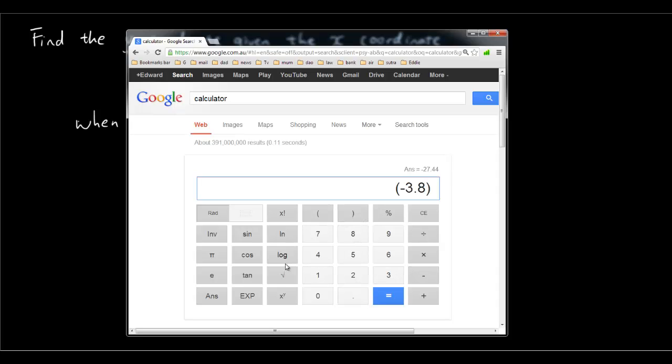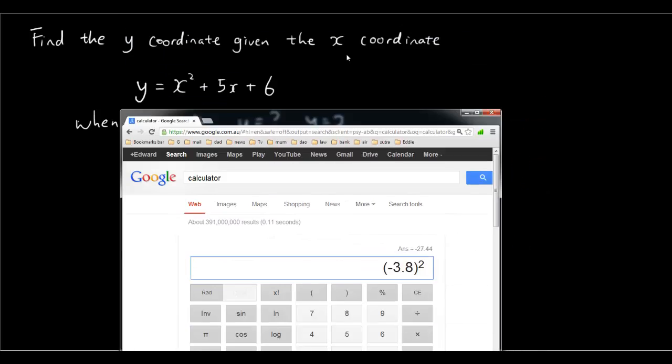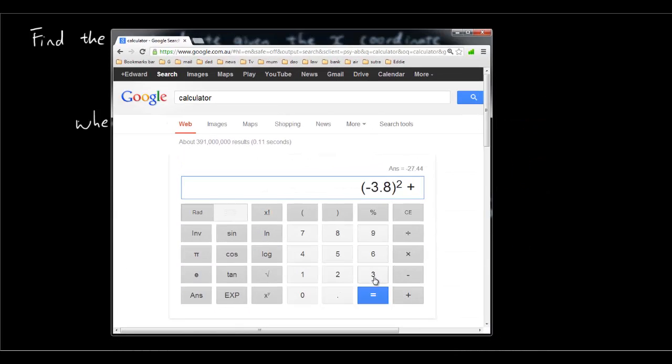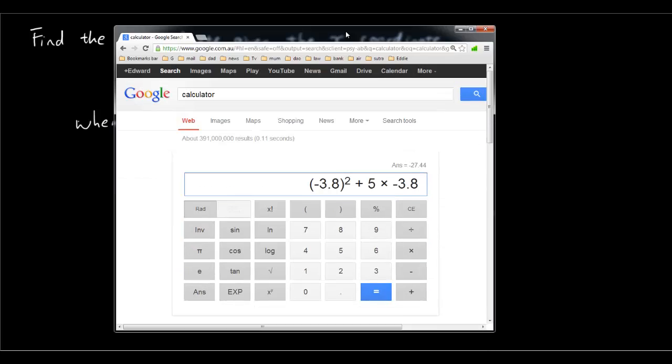So let's try that again. Let's try bracket negative 3.8 squared, to the power of 2, plus 5 times negative 3.8, plus 6. 1.44, that looks about right.